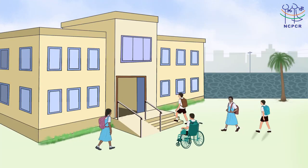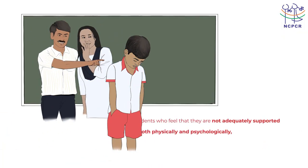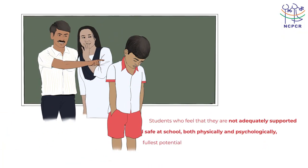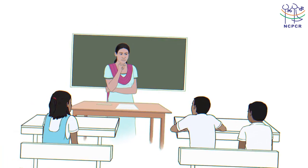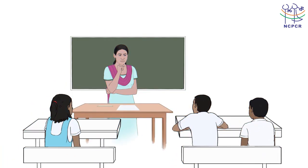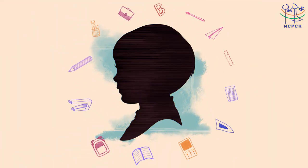Safety and learning go hand in hand. Students who feel that they are not adequately supported and safe at school, both physically and psychologically, cannot learn to their fullest potential. A safe learning environment is essential for students of all ages. Without that, they are unable to focus on learning the skills needed for a successful education and future.